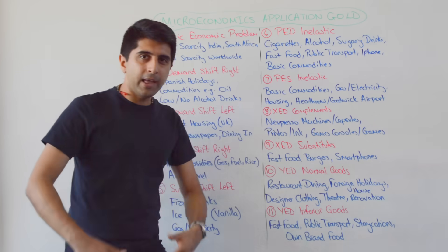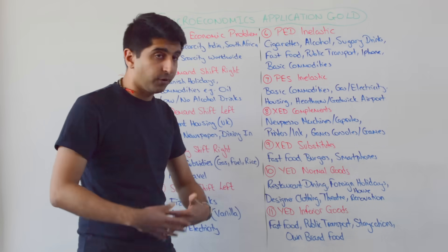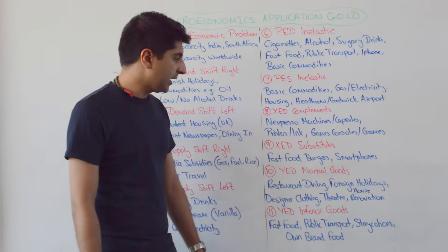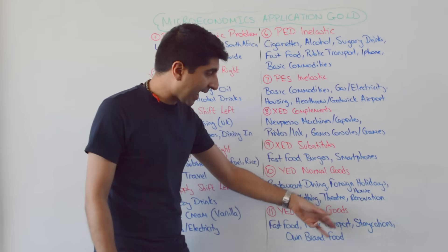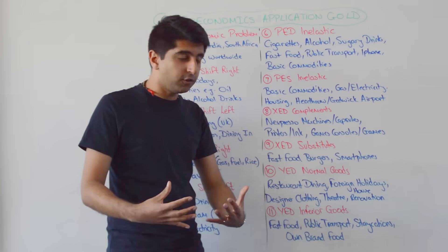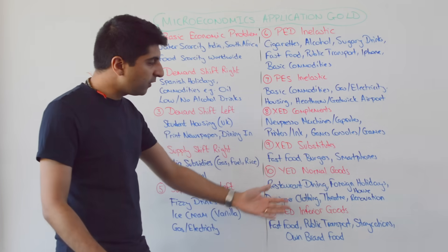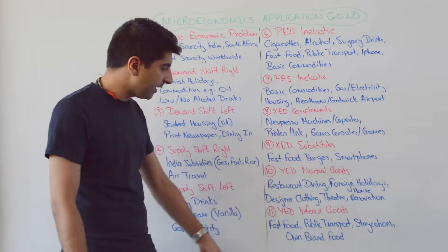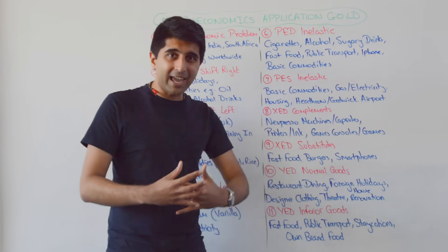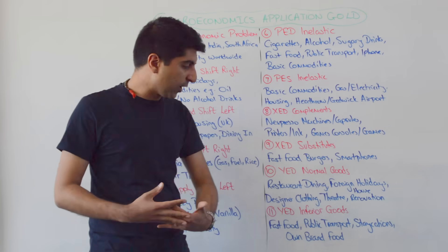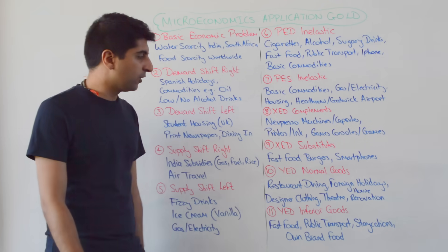Normal goods — where incomes rise, demand will increase: restaurant dining, foreign holidays, designer clothing, theatre, and house renovations. We demand more of these as we get richer. Whereas inferior goods — as we get richer, we demand less: fast food, public transport, staycations or holidaying at home, and own-brand food.